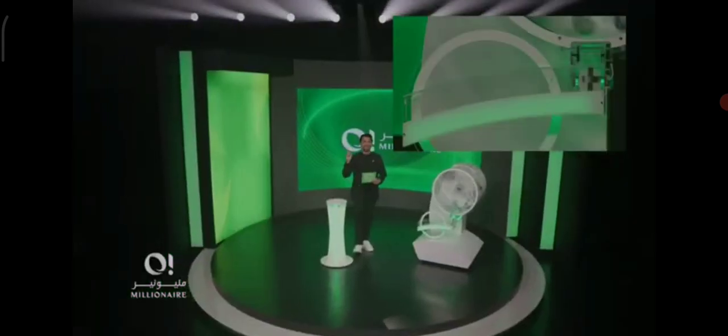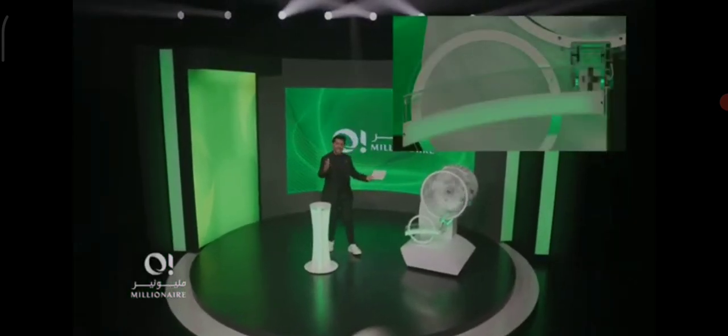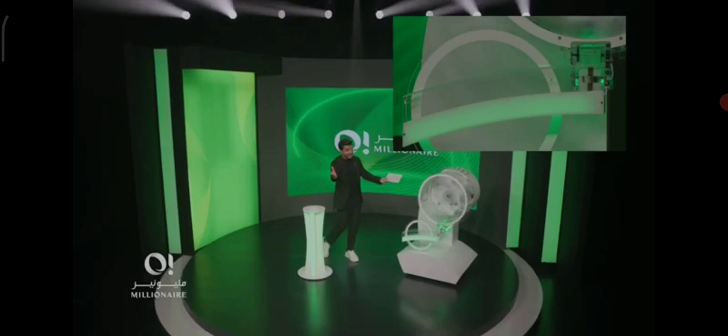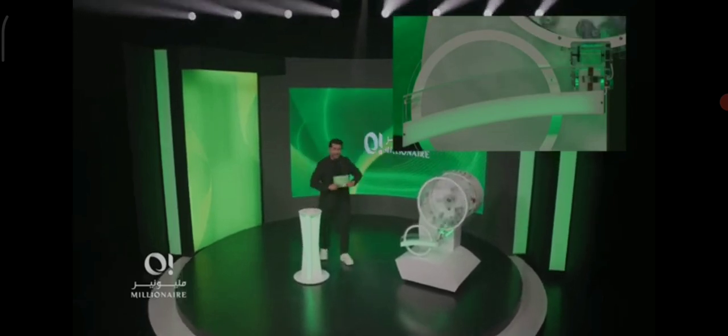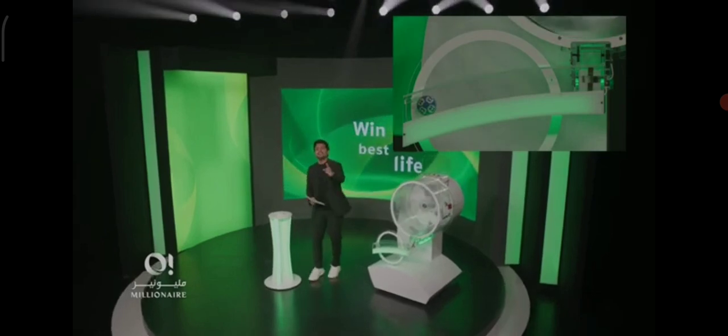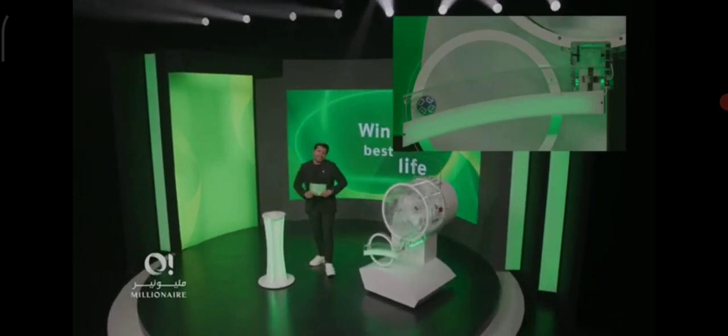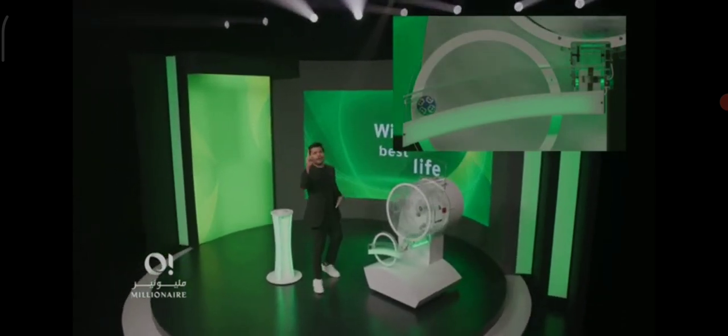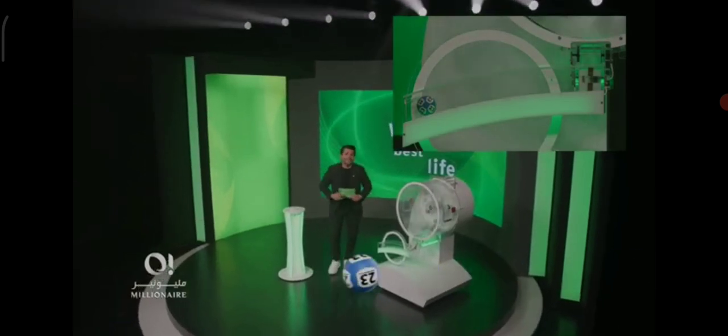There it is, happening live in front of you - 44 balls of O Millionaire. Are we ready for tonight's draw? Alright, here we go. The first number for tonight, live as it happens. And there it rolls out, the first number: number 23. Today's first number, number 23.